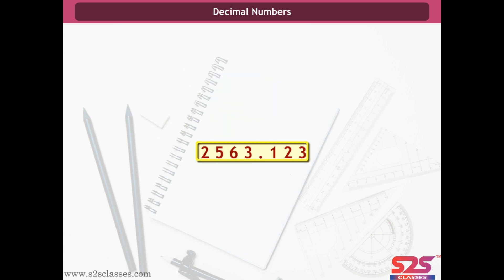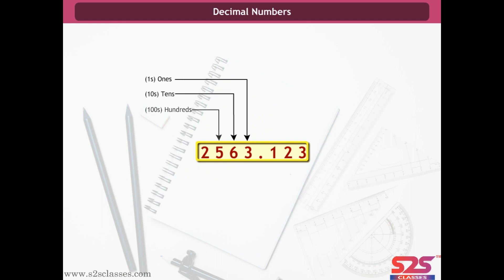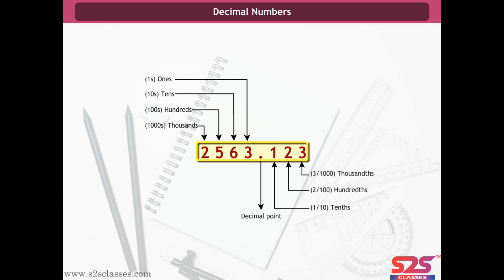For example, in 2563.123: 3 represents 1s, 6 represents 10s, 5 represents 100s, 2 represents 1000s. After the decimal point: 1 represents tenths, 2 represents hundredths, 3 represents thousandths.